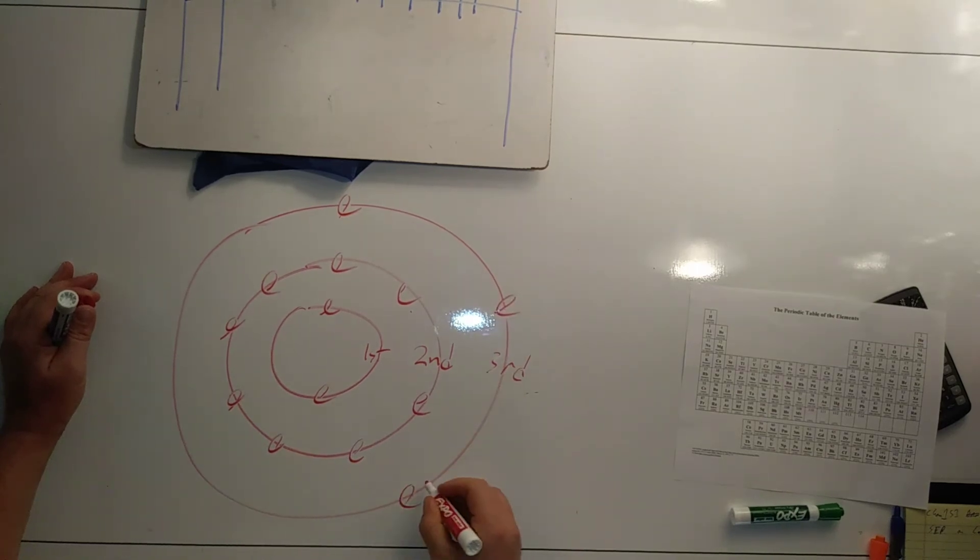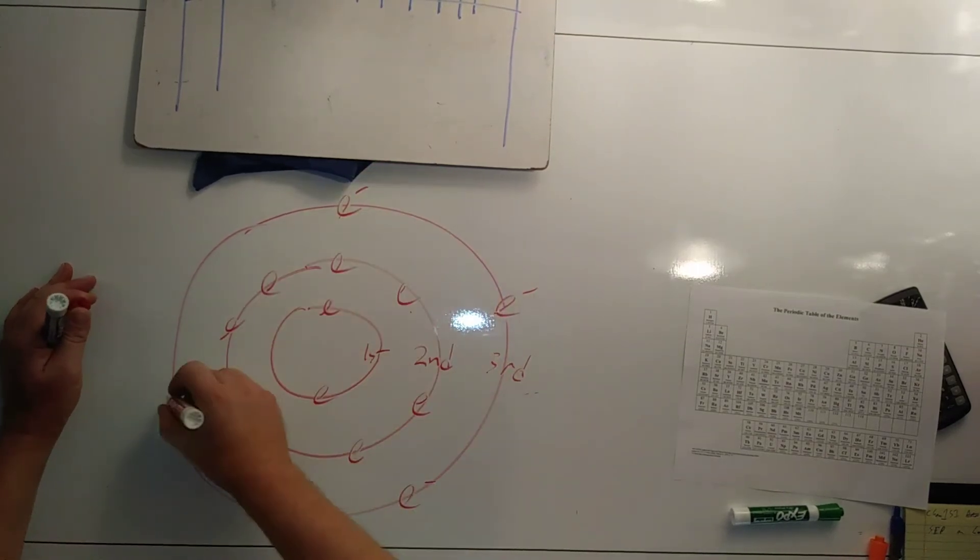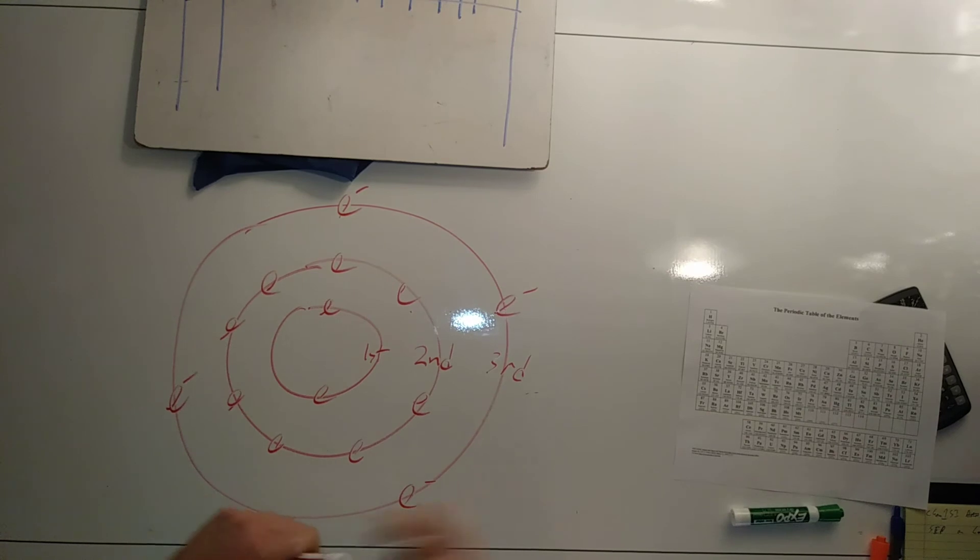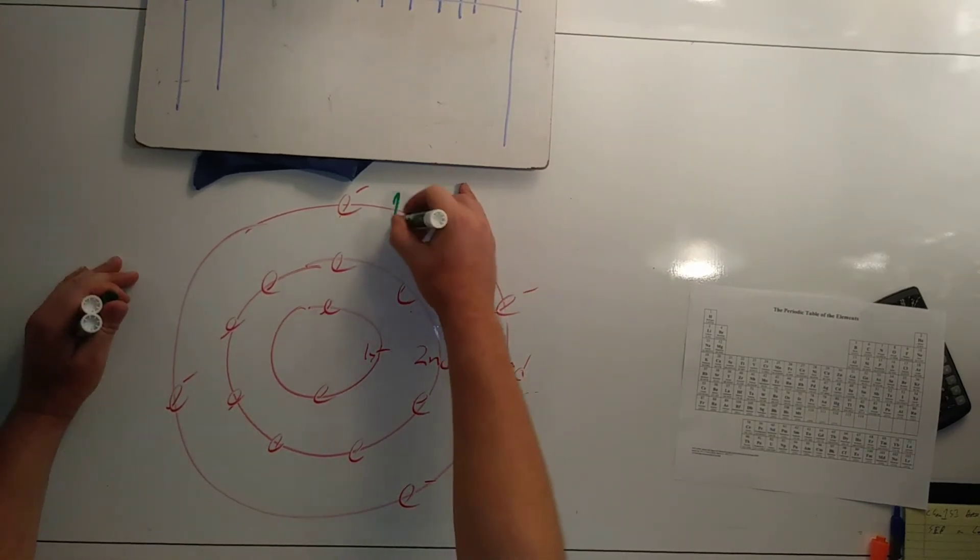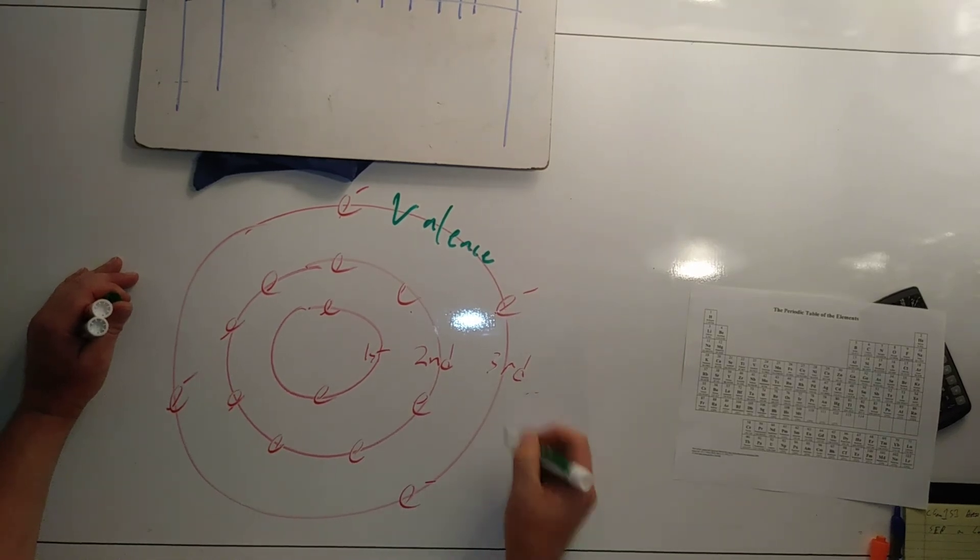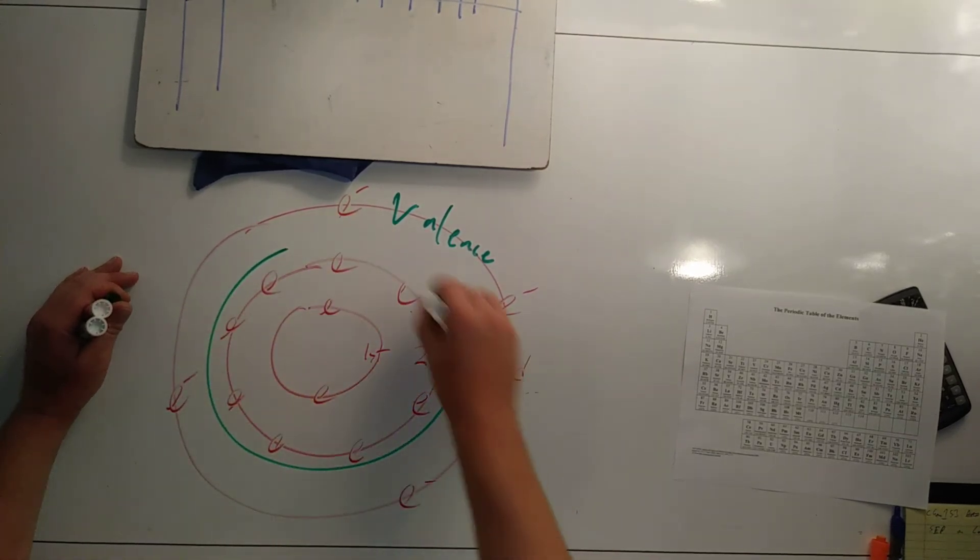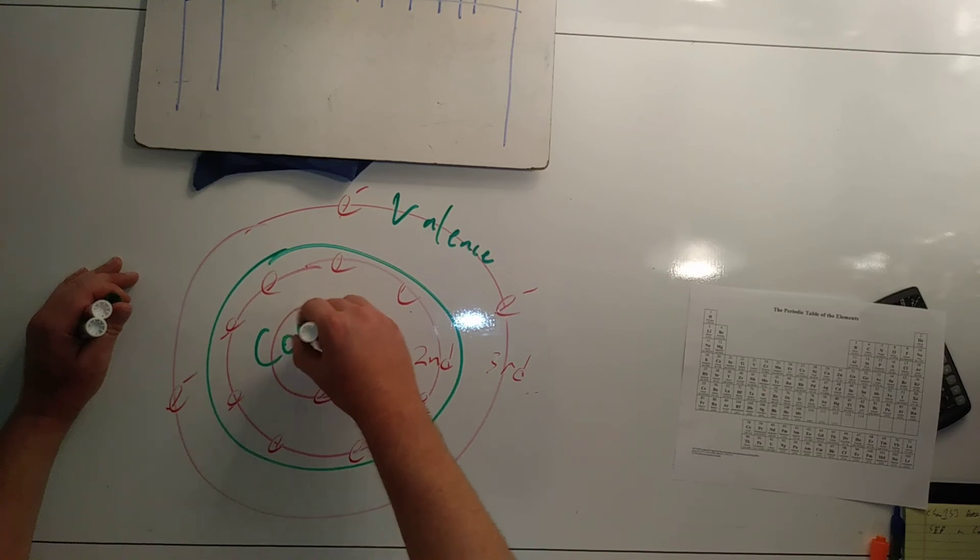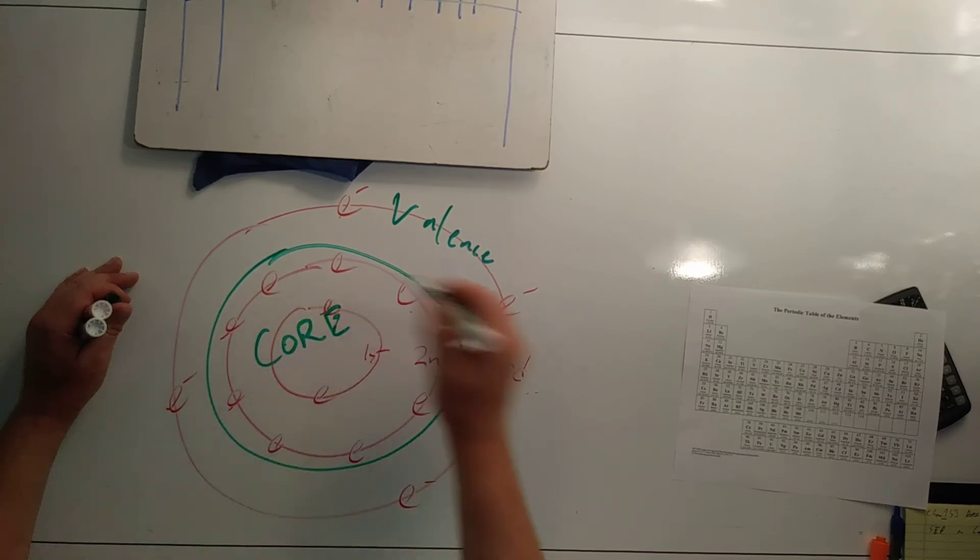Our electrons are spread because of negative, negative repulsion. This outermost shell is the valence shell involved in bonding and these are our core electrons that are not involved in bonding.